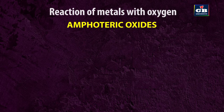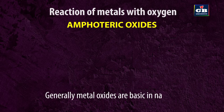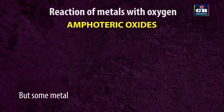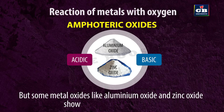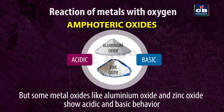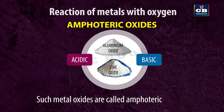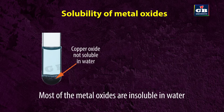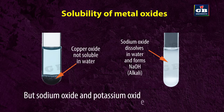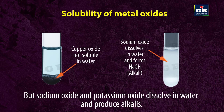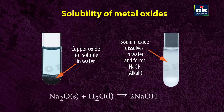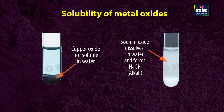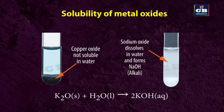Amphoteric oxides: Generally, metal oxides are basic in nature. But some metal oxides like aluminium oxide and zinc oxide show both acidic and basic behavior. Such metal oxides are called amphoteric oxides. Solubility of metal oxides: Most metal oxides are insoluble in water, but sodium oxide and potassium oxide dissolve in water to produce alkalis: Na₂O + H₂O → 2NaOH; K₂O + H₂O → 2KOH.